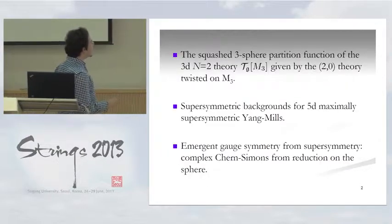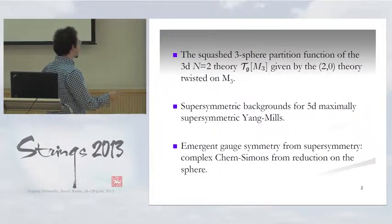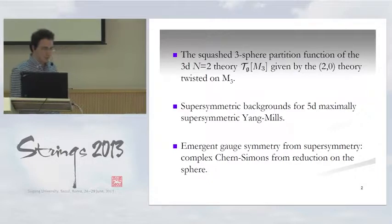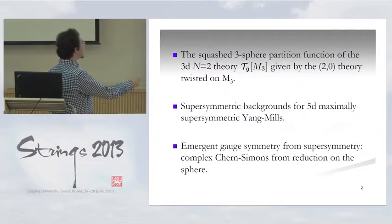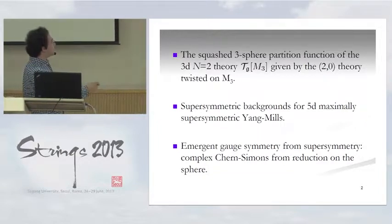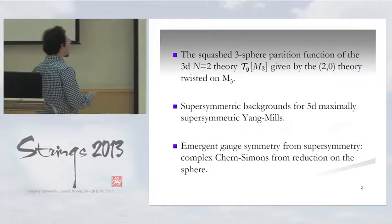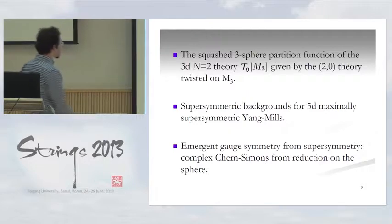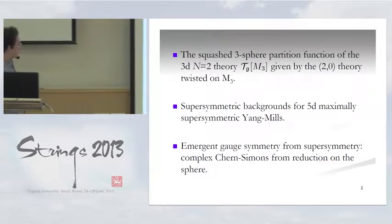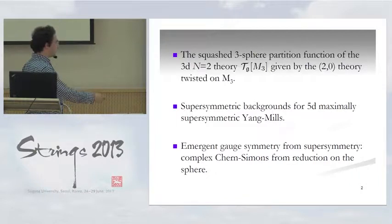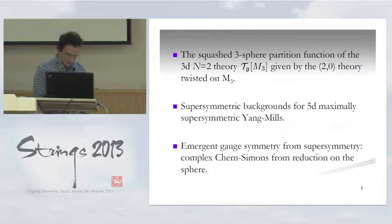The idea is that one may take the M5 brane world volume theory — the 2-0 theory in 6 dimensions — and twist it on some 3-manifold to obtain a 3-dimensional N=2 theory, a theory in 3 dimensions with 4 supercharges, and compute some partition functions of it, like these squashed sphere partition functions we heard about in the last talk. There's an interesting conjecture that it's related to the partition function on the 3-manifold of some theory. We'll derive this very directly by going through the relation of the 2-0 theory to maximally supersymmetric 5D Yang-Mills. A curious feature is that you start with something supersymmetric and end up with something without supersymmetry and with non-compact gauge symmetry, and somehow these two differences cancel out.